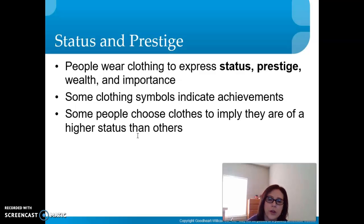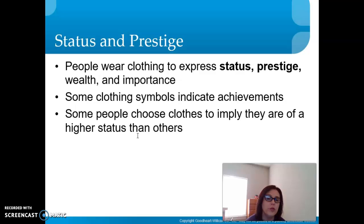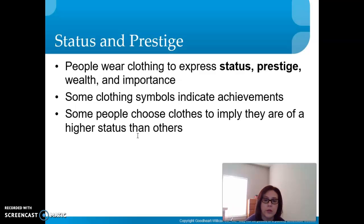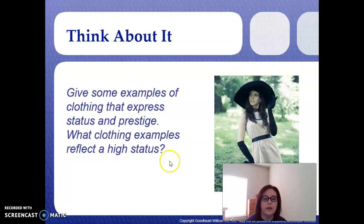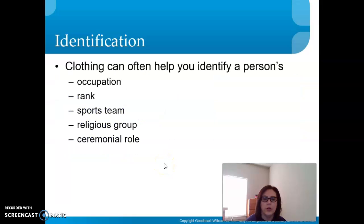Status and prestige: people wear clothing to express wealth and importance. For example, going to a fancy restaurant you'd dress better than you would for school. Some clothing symbols indicate achievements, and some people choose clothes to imply a higher status. In the military, your rank insignia indicates that you've been promoted — that's a positive achievement. Write some examples of clothing that express status and prestige on your Cornell notes.